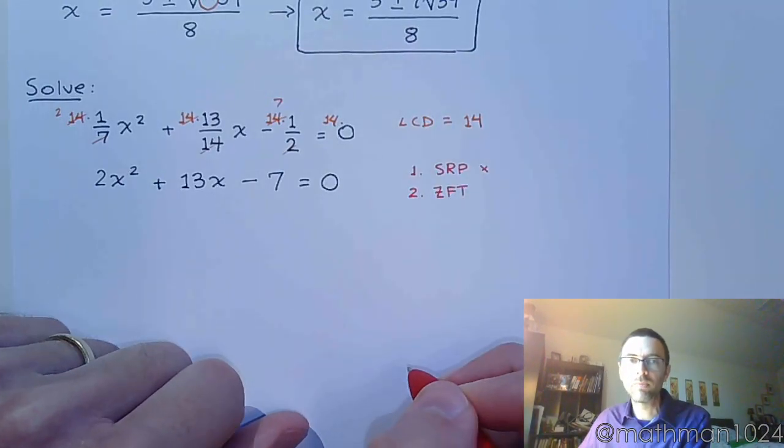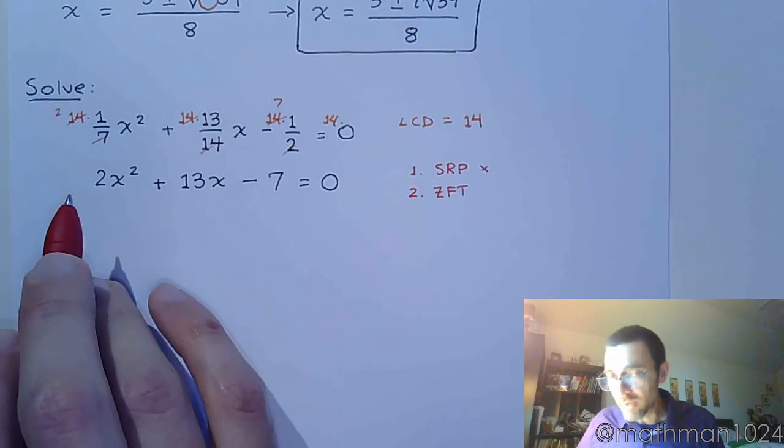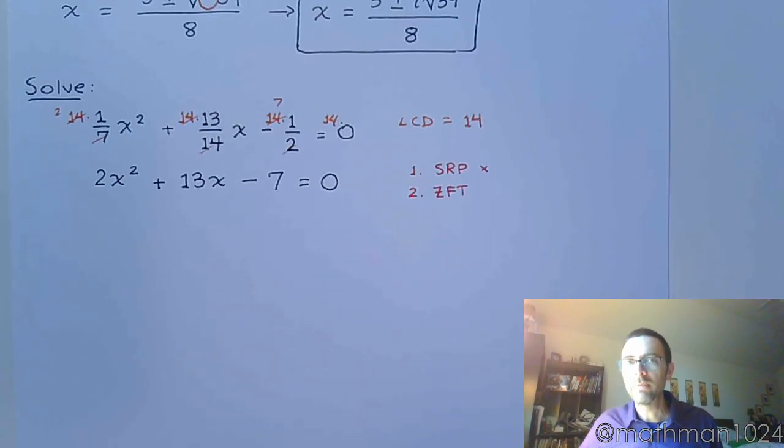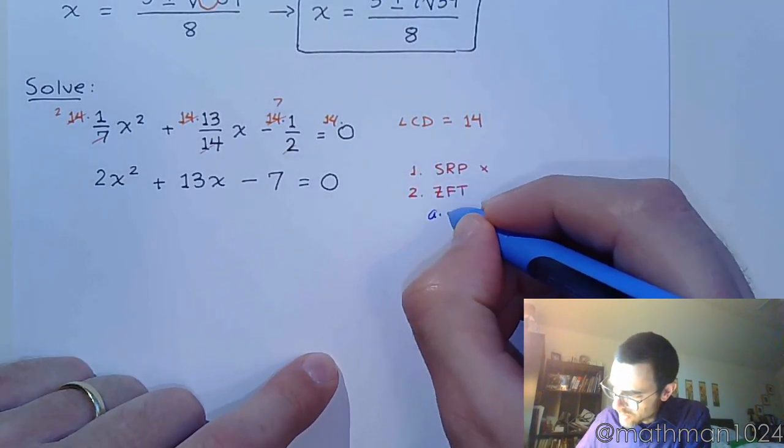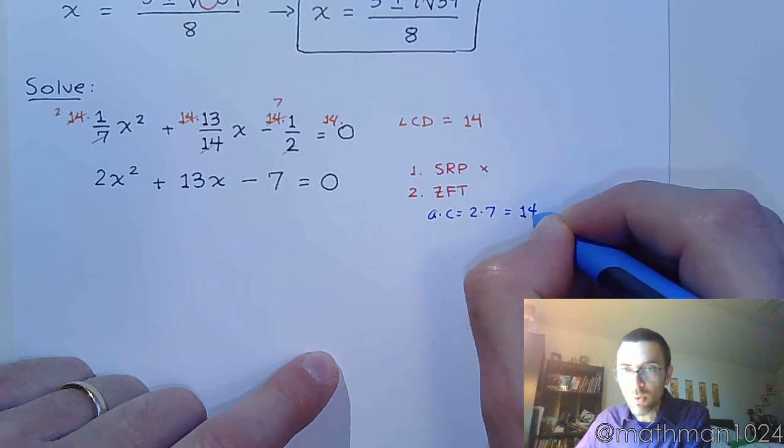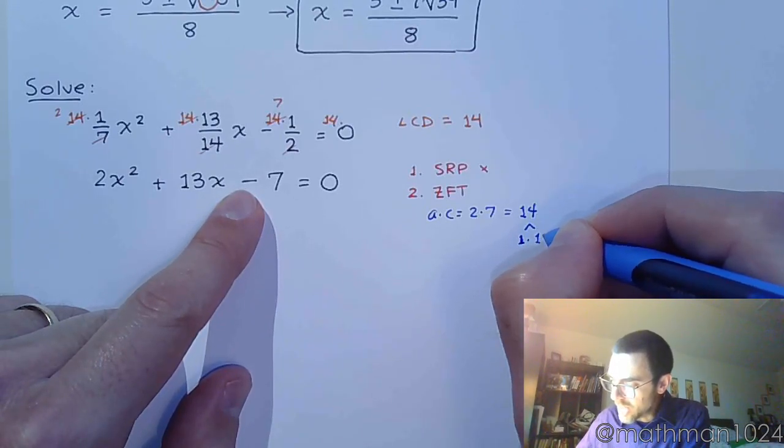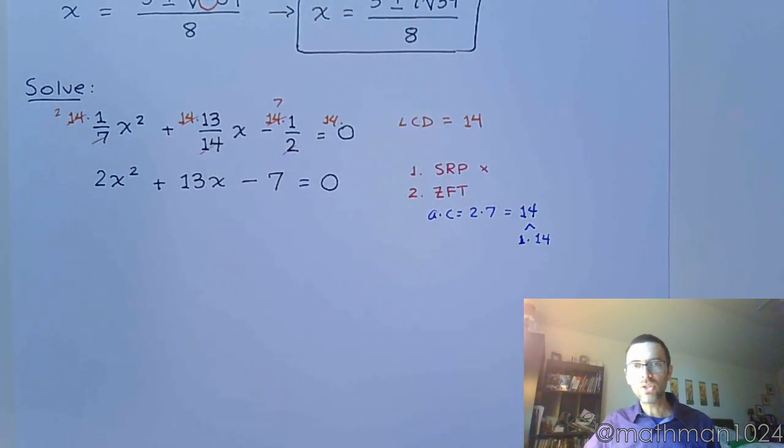The second thing we try to do is factor. Can I factor this? Well let's see. If I do the AC method, 2 times 7 is 14. Are there factors of 14 that subtract to 13? Yeah. Yeah there are. So if I do AC, so A times C is 2 times 7, and I get 14. The factors of 14 that subtract to 13 are 1 and 14. So what this tells me is that I should use factoring. I know how to factor. Let me just go ahead and factor. Granted, you can also throw this into the quadratic formula. You'll get the same answer, but it will take a lot more steps to get there.